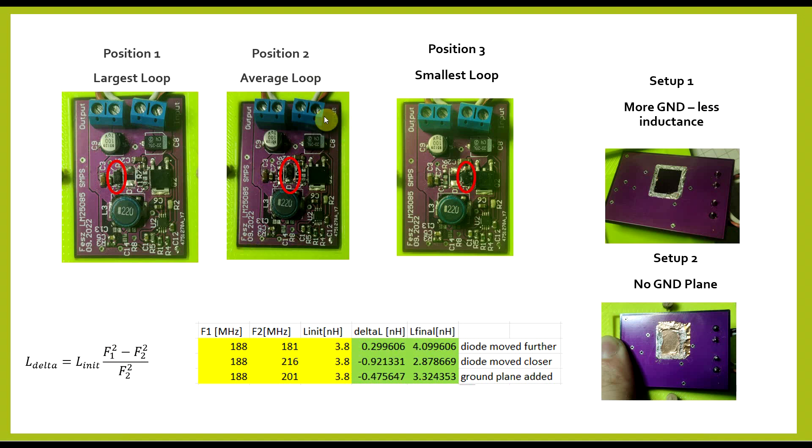Using a similar calculation method, we can now determine the inductance variations and the absolute inductances that we had in our initial experiments. So starting off with the diode position, when we move the diode further from the transistor, so increasing the hot loop, we increase the inductance by about 300 pF to a final value of 3.3 nanohenries. When we move the diode closer to the transistor, so to get the smallest possible hot loop,